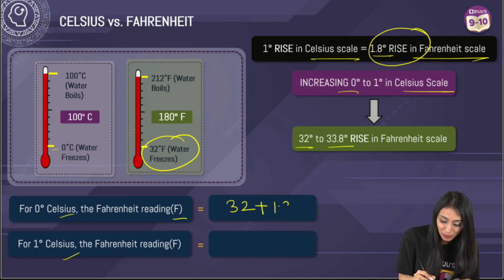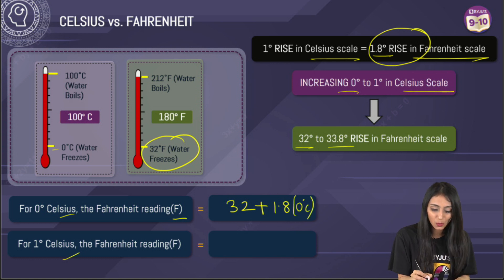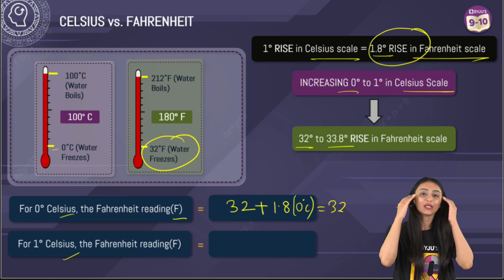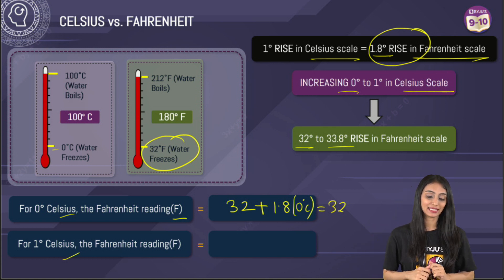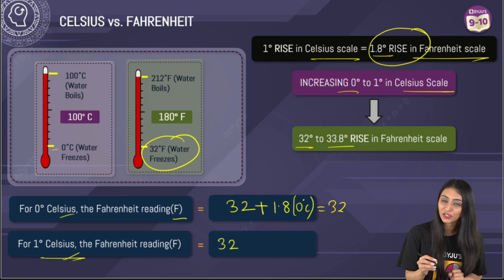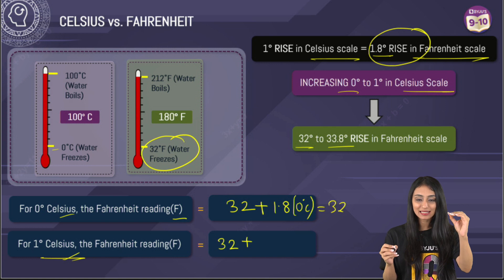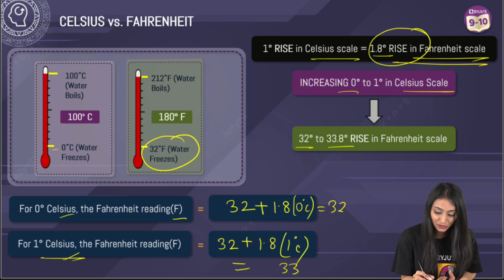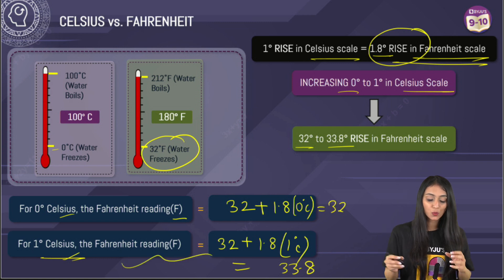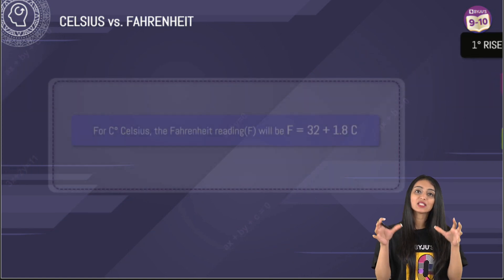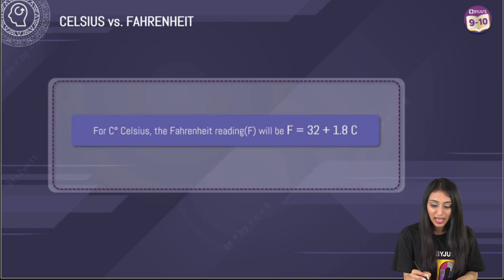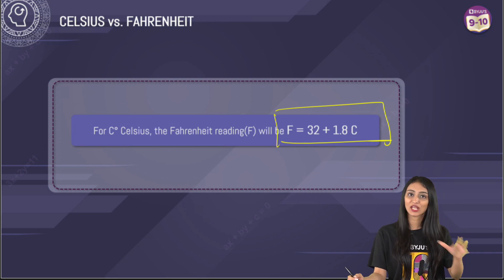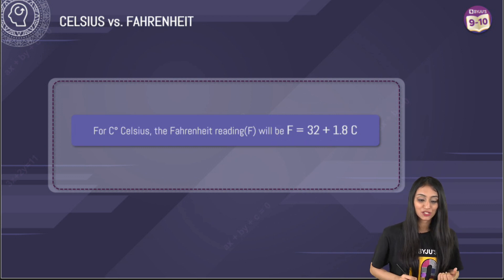So 32 is the starting point, and I multiply 1.8 by the Celsius value. For 0 degrees Celsius: 1.8 times 0 is 0, so 32 plus 0 equals 32. That means 0 degrees Celsius equals 32 degrees Fahrenheit. For 1 degree Celsius: it already starts from 32, and 1.8 times 1 gives 1.8, so 32 plus 1.8 equals 33.8 degrees Fahrenheit. That's how we can convert temperatures from Celsius to Fahrenheit. The final equation is F = 32 + 1.8C, which can be used for the conversion of these two scales.